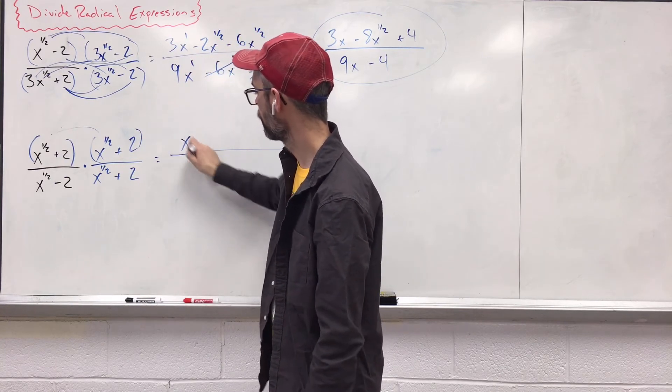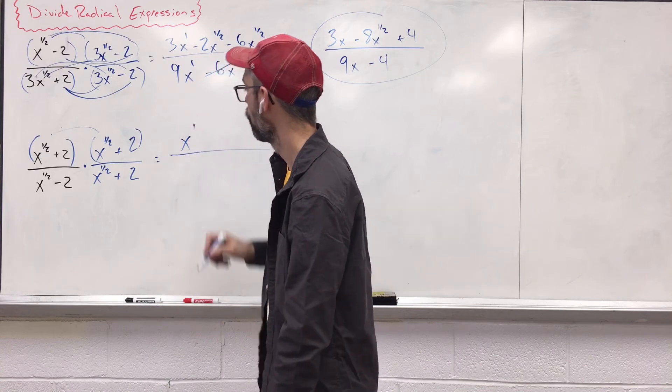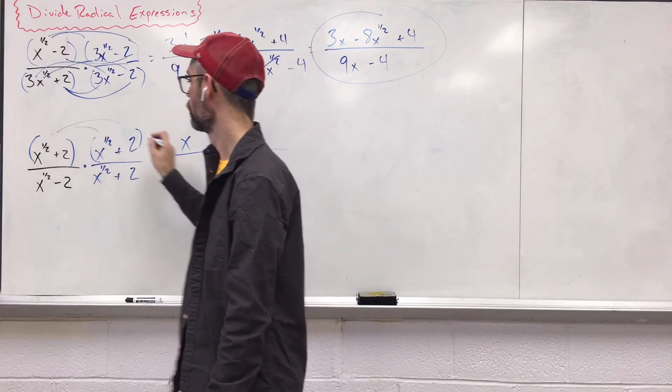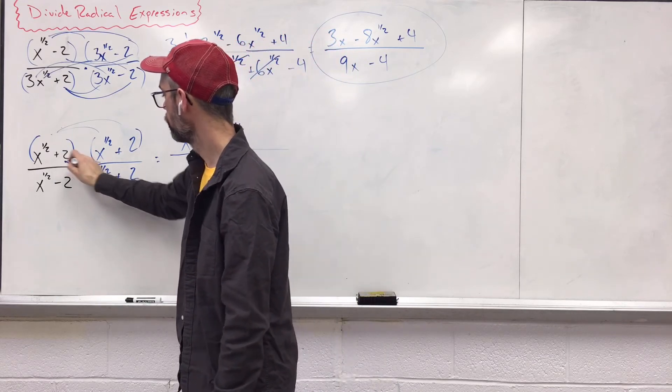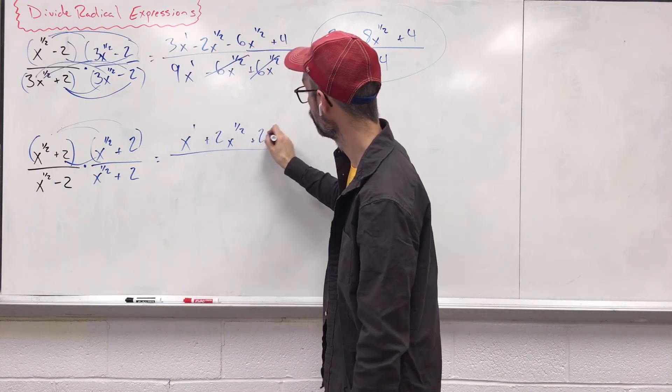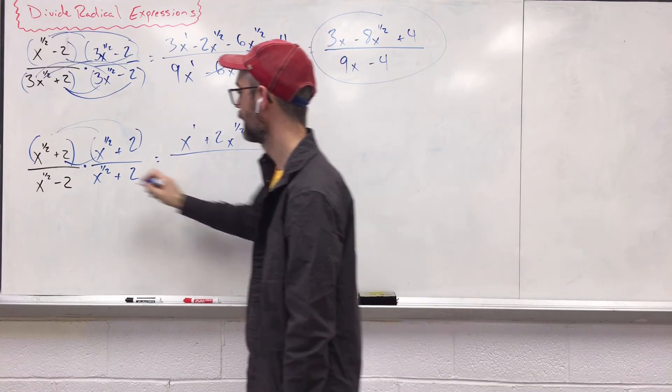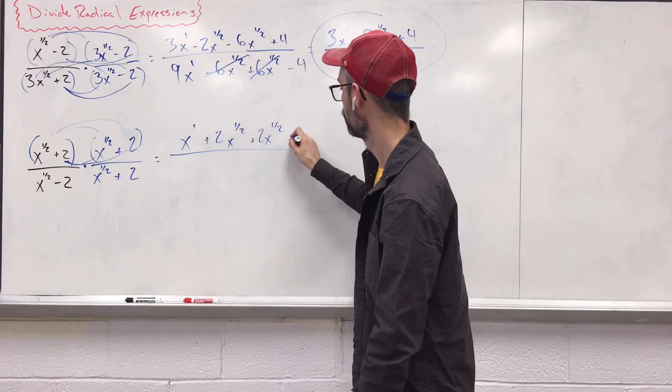x to the one-half, x to the one-half is going to give us x. Add the exponents. 1 plus 2x to the one-half. Distribute the 2 now. 2x to the one-half again. And then 4.